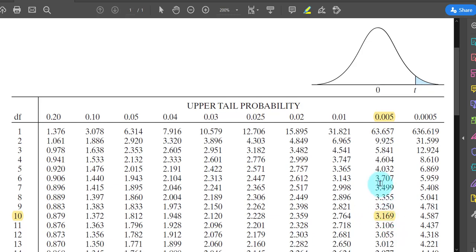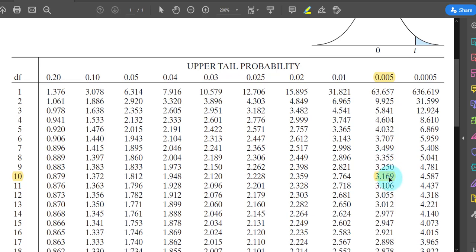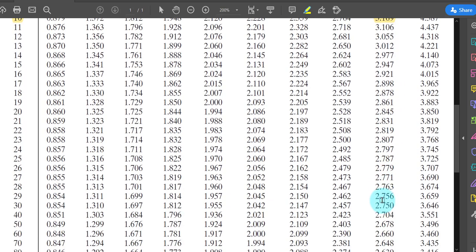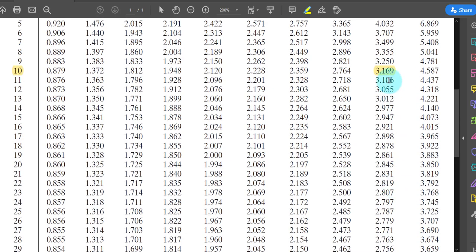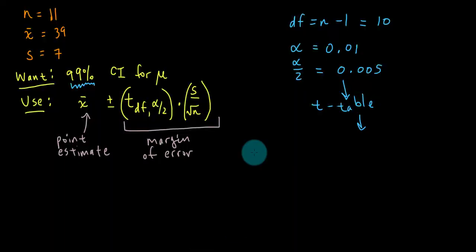Another way to figure out which column you have to go to in this T table, if I keep my cursor in this column, it says 99% confidence level. So you can double check your work there. So 3.169 is our T critical value.